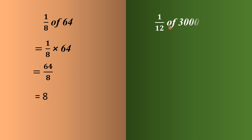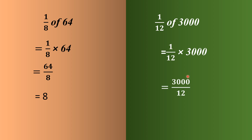We have another question: 1/12 of 3000. Here also, 'of' means multiply. So 3000 will be multiplied by 1/12, which gives us 3000 by 12. And 3000 divided by 12 gives the answer 250.